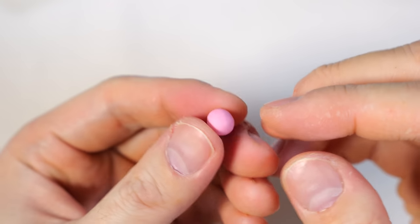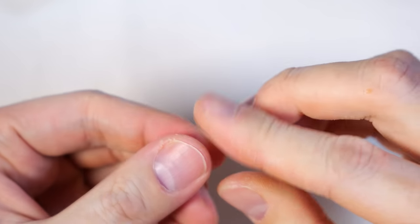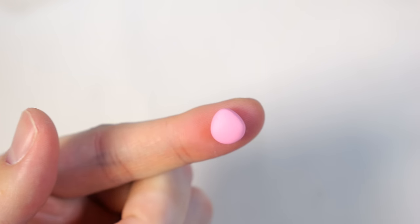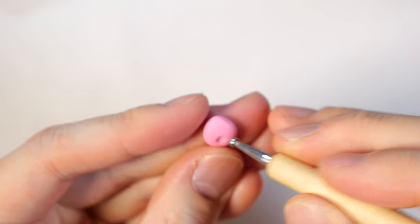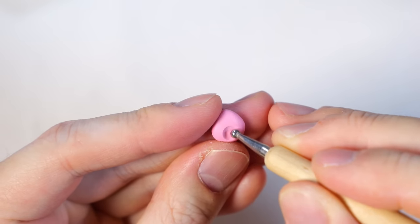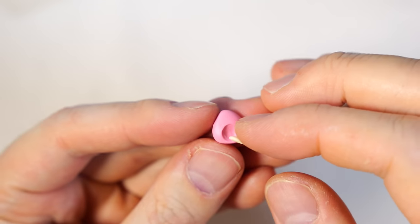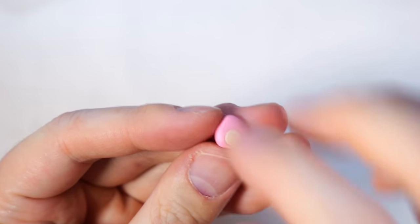And then for the final polymer clay charm we're gonna make a little strawberry, so I'm gonna take some pink clay and pinch it into a flattened teardrop shape. Then using the fattest dotting tool that I have, we're gonna make a giant circular indent.